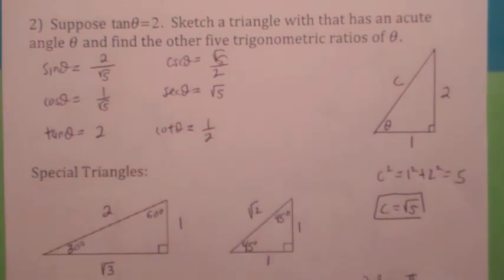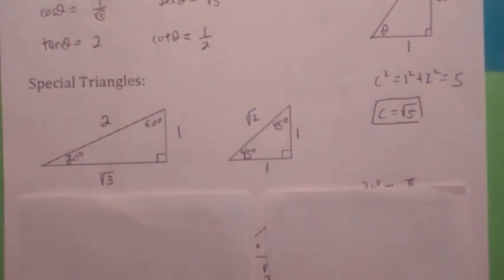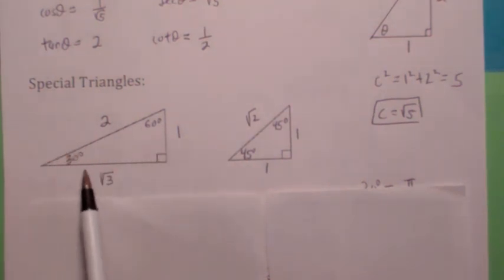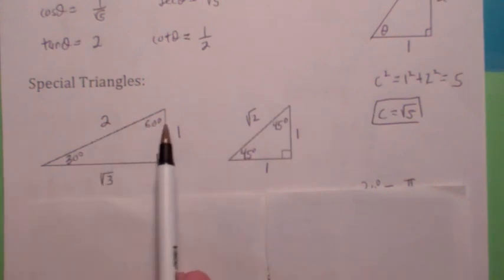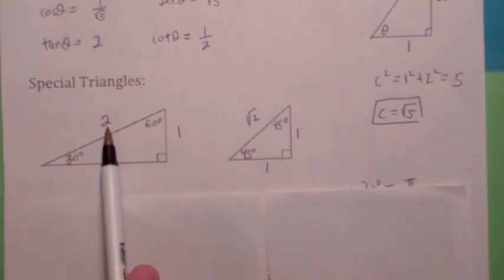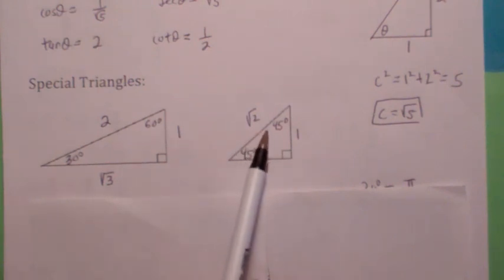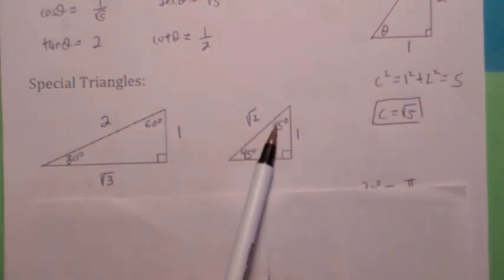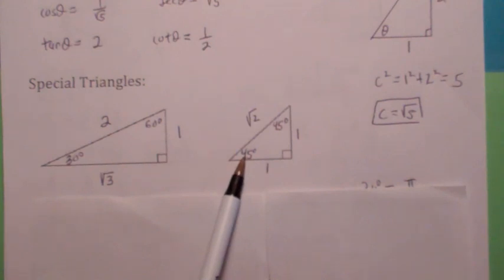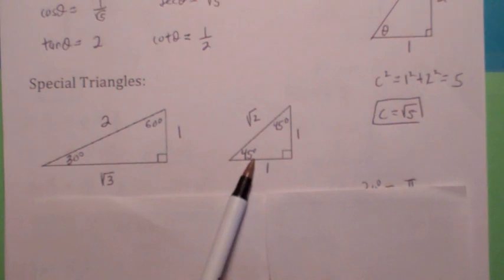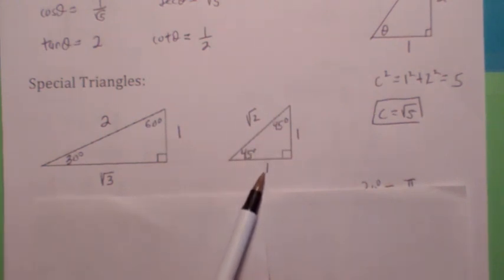Now there are some special triangles that you'll learn — you've got to learn these. If you have a 30-60-90 right triangle, the sides appear in this ratio: the hypotenuse 2, the shorter leg 1, and the longer leg radical 3. If you have a 45-degree right triangle — of course, if one angle is 45 the other has to be 45 too because they add up to 90 — so it's an isosceles right triangle. Those sides will be in this ratio: radical 2, 1, and 1.